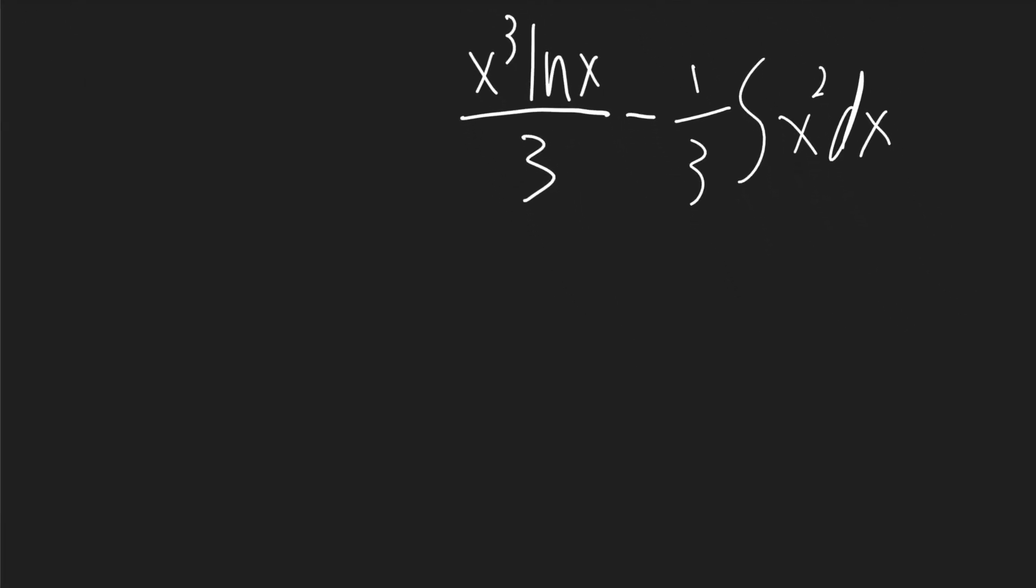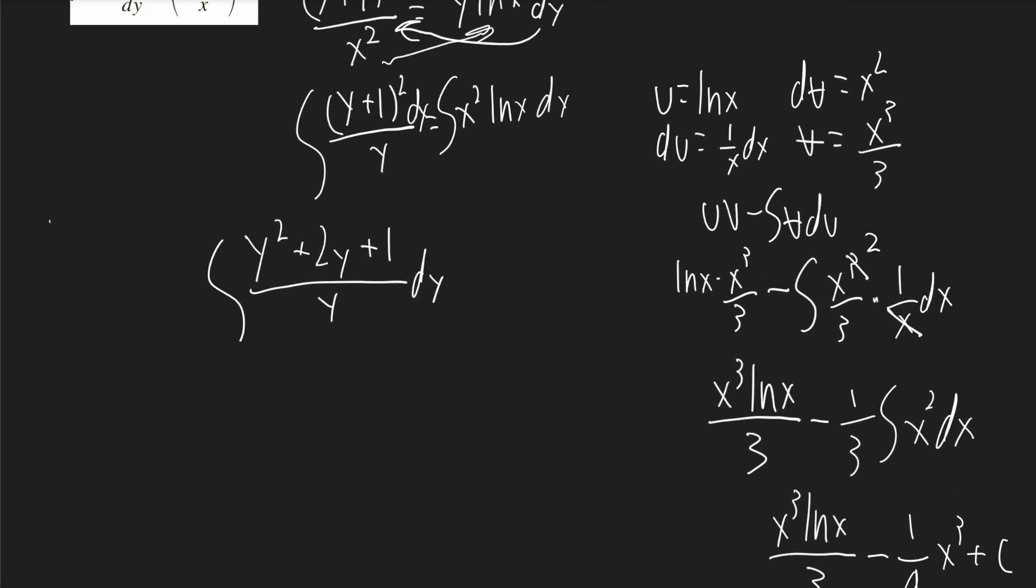So this will become x cubed ln x over 3 minus 1 ninth x cubed plus c. So now that's my term for the right side.